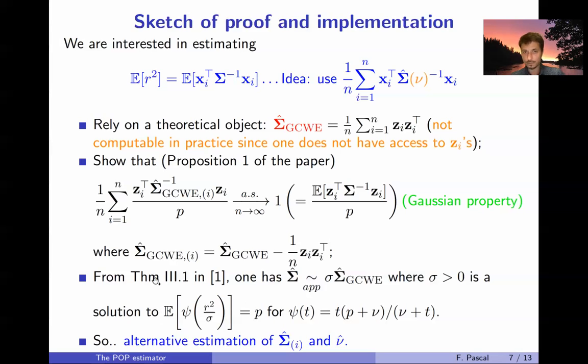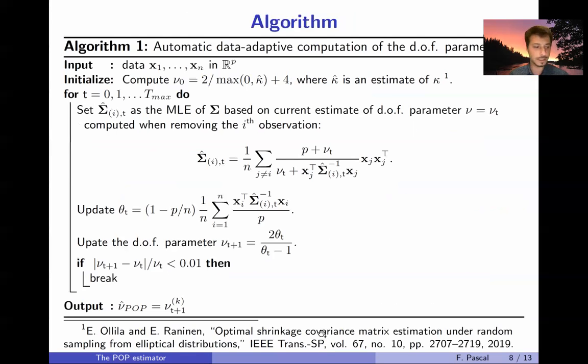Then from the theorem coming from one paper we have that the M-estimator is equivalent to this quantity times a scaling constant that is the solution of this equation also depending on nu. So at the end of the day we have a way to estimate nu and a way to estimate sigma hat.